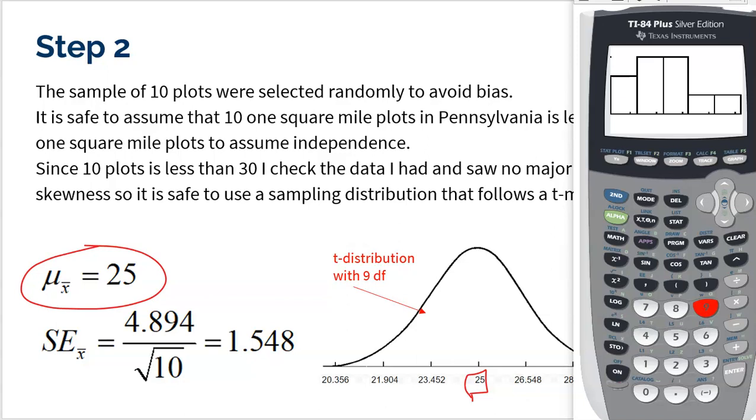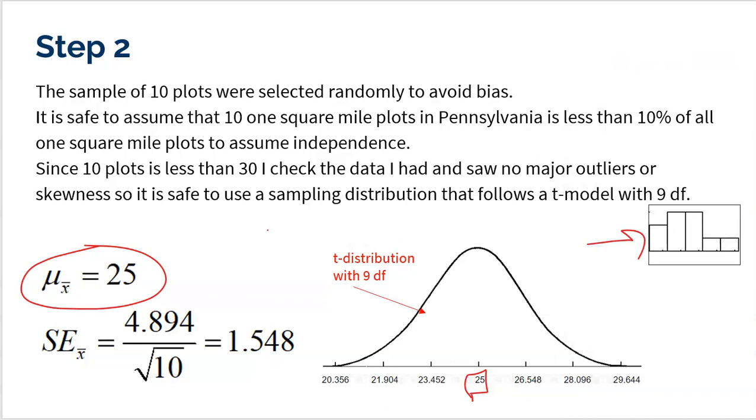It doesn't look perfectly normal or symmetric, but it doesn't look terrible either. Remember, I only had 10 plots to begin with. So that is why it is safe to use a sampling distribution that follows a t-model with 9 degrees of freedom. 10 in my sample, minus 1, 9 degrees of freedom.